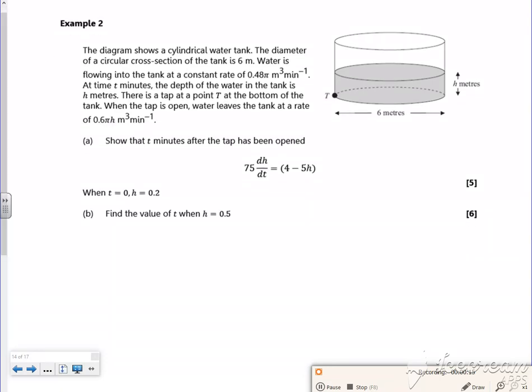So we've got a cylindrical water tank, the diameter is 6, water's flowing into the tank at a constant rate of 0.48 metres cubed per minute. Look at the units there, it's volume over time, so that's dV by dT, so you've got it flowing in, so dV by dT, so it's going in at 0.48 pi. And then it says there's a tap at point P at the bottom of the tank, the tap is open and water's leaving at 0.06 pi h metres cubed. So you've got it coming out, so it's like minus because it's coming out isn't it? Pi h, but that's also volume over time, so that's also dV by dT.